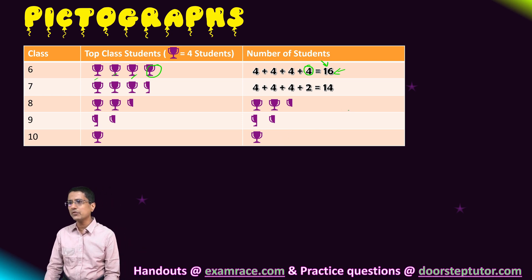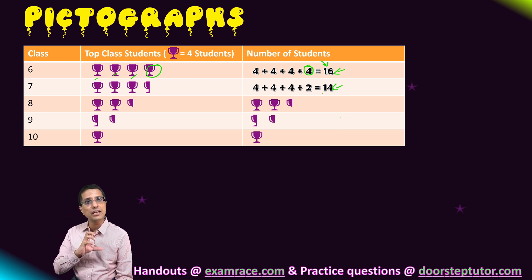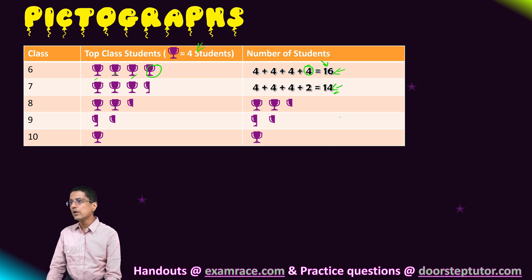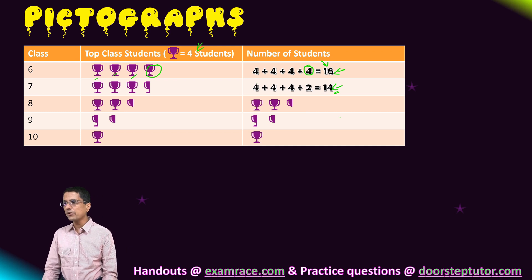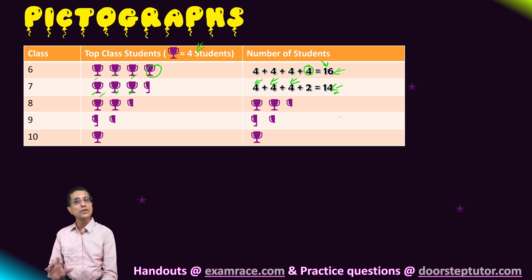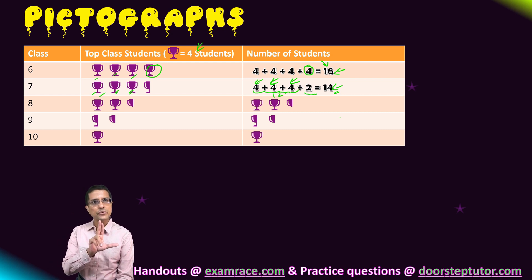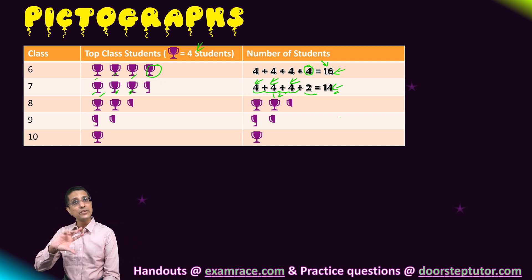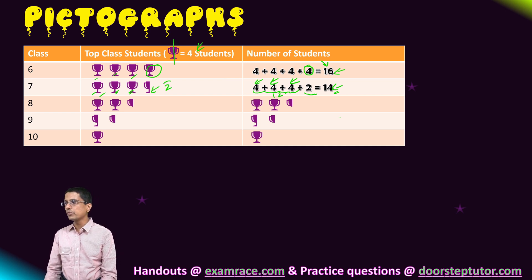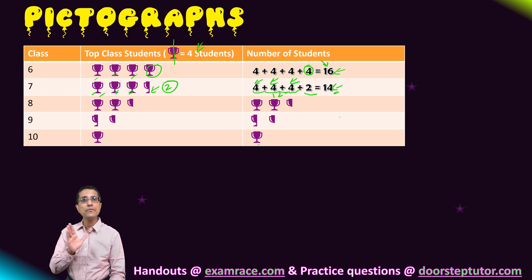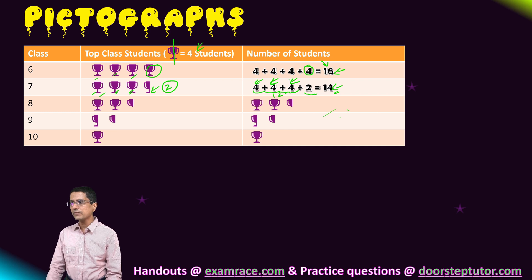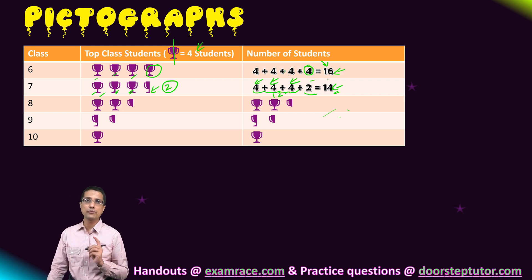The next value I need to represent is 14, but 14 is not evenly divisible by four. So I draw three full trophies — each worth four — giving me twelve. I am left with two more, so I draw half a trophy to represent two. My final value becomes 4+4+4+2, which equals 14.